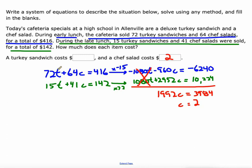All right. So now we can use that to figure out how much the turkey salad costs. We'll take this green equation over here. Do 15T plus 41 times 2 because two chef salads equals 142. So 15T plus 82 equals 142. Subtract 82 from both sides. And 142 minus 82 is 60. And then divide both sides by 15. And you get 4 as in a turkey sandwich costs $4.